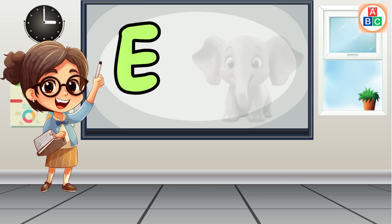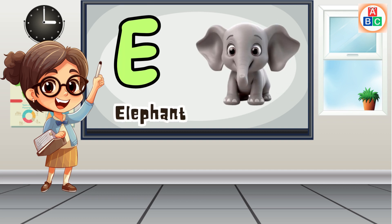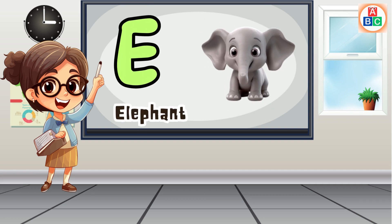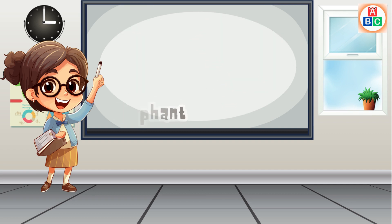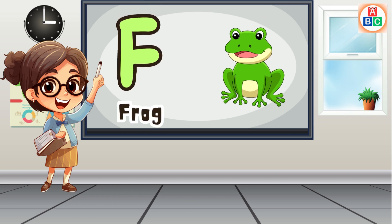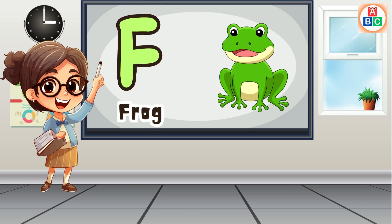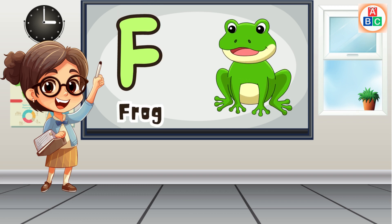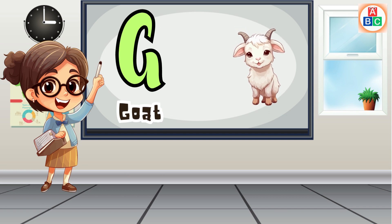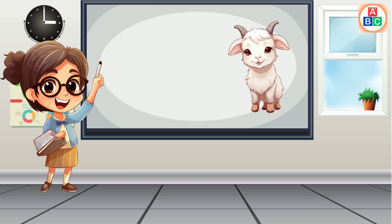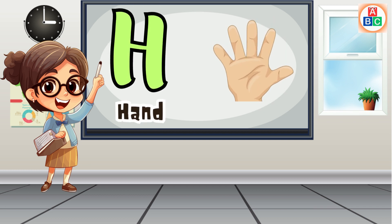E is for elephant, e-e-elephant. F is for frog, f-f-frog. G is for goat, g-g-goat. H is for hand, h-h-hand.